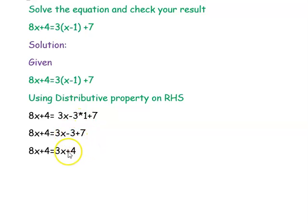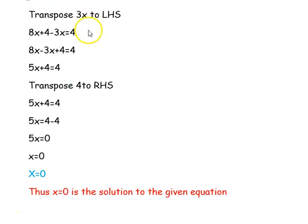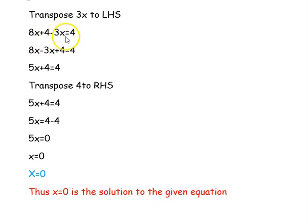Minus 3 plus 7 will become plus 4. The simplified equation is 8x plus 4 equal to 3x plus 4. Next step, we are transposing 3x from the right hand side to the left hand side. It is plus 3x, so moving left it becomes minus 3x. The equation is 8x plus 4 minus 3x equal to 4.